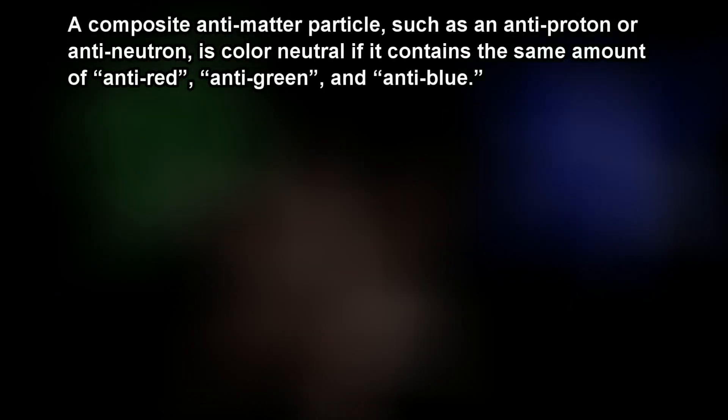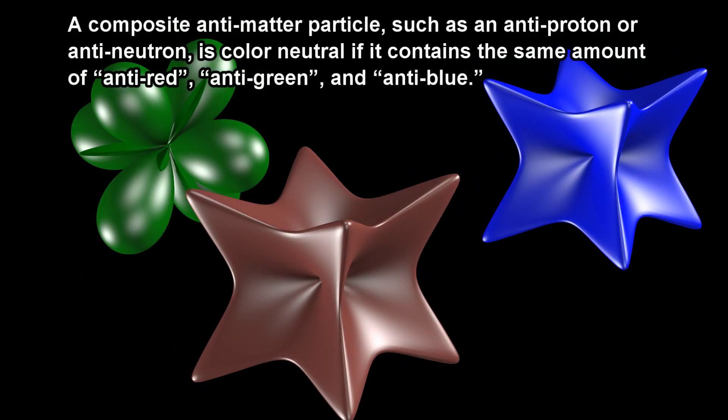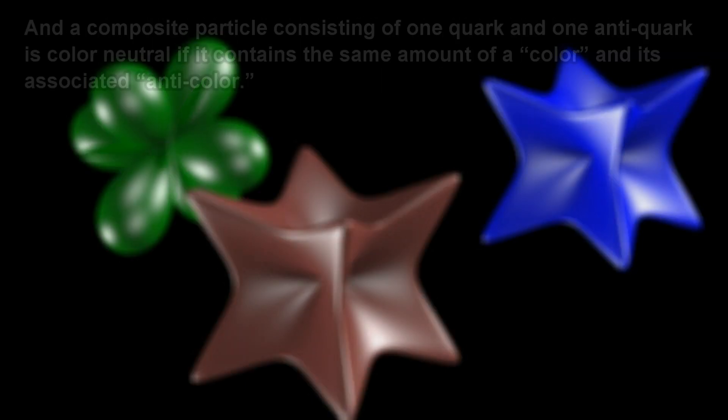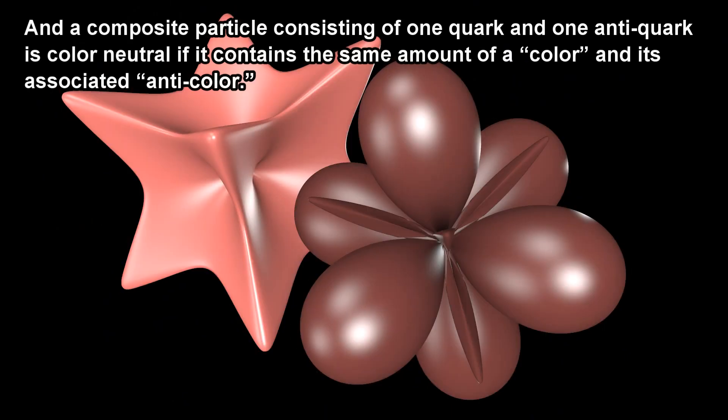A composite particle, such as an anti-proton or anti-neutron, is color neutral if it contains the same amount of anti-red, anti-green, and anti-blue. And a composite particle consisting of one quark and one anti-quark is color neutral if it contains the same amount of a color and its associated anti-color.